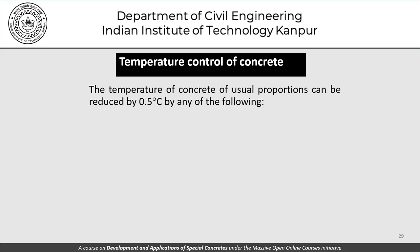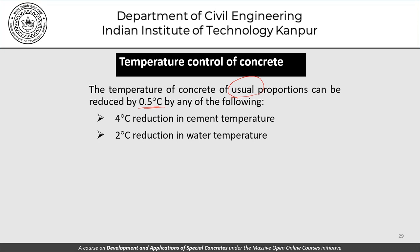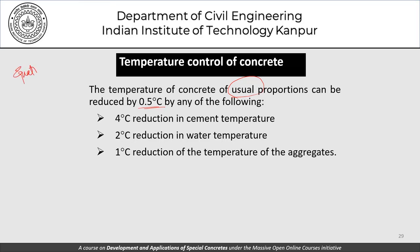As a thumb rule for temperature control, the temperature of concrete of usual proportions can be reduced by 0.5 degrees Celsius by any of the following: a 4-degree reduction in cement temperature, a 2-degree reduction in water temperature, or a 1-degree reduction in aggregate temperature. These relate to an equation for estimating fresh concrete temperature given ingredient temperatures and proportions. It is up to the engineer which route to use.